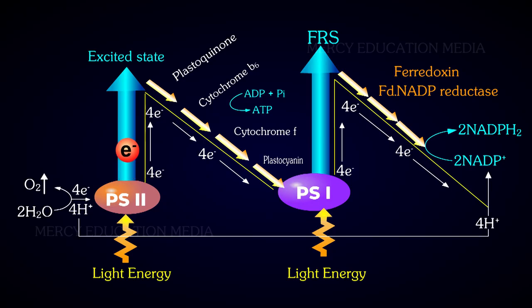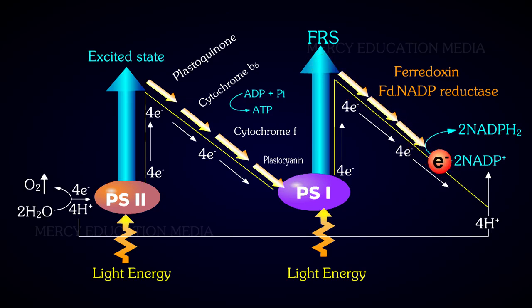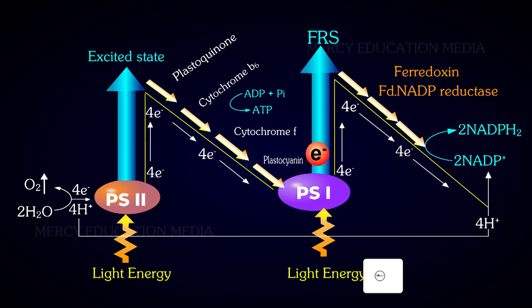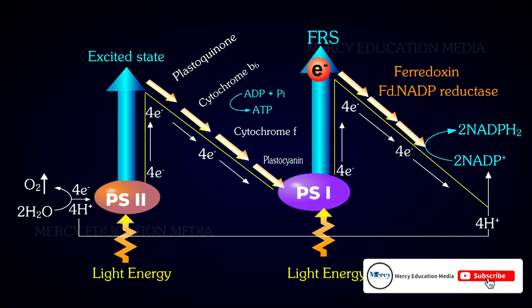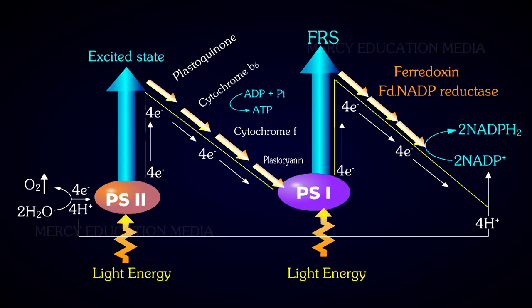The hole in PS1 has been filled by the electron from PS2. The electrons are then transferred from PS1 to NADP+ for reduction. Therefore, this electron transport is called non-cyclic electron transport and the accompanying phosphorylation as non-cyclic photophosphorylation. The non-cyclic electron transport takes place in the form of Z; hence, it is also called the Z-scheme.